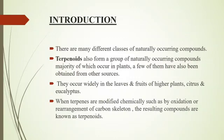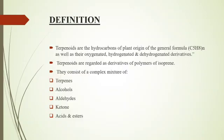The word terpene is derived from turpentine. When terpenes are modified chemically, such as by oxidation or rearrangement of carbon skeleton, the resulting compounds are known as terpenoids. Terpenoids can be thought of as a modified form of terpenes. Terpenoids are the hydrocarbons of plant origin with the general formula C5H8, as well as their oxygenated, hydrogenated, and dehydrogenated derivatives.